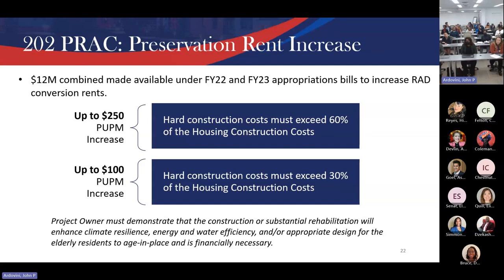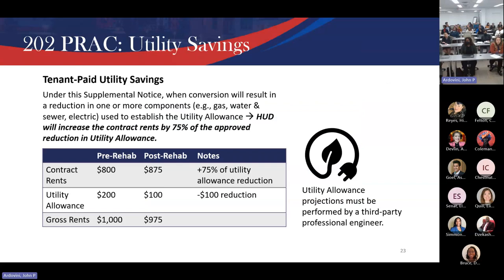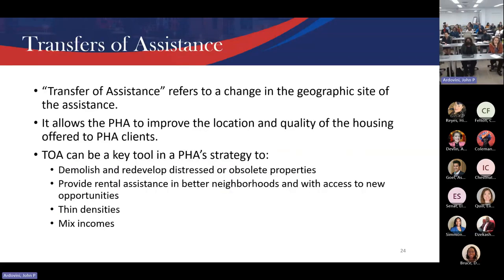The utility savings rent boost: when scopes of work address systems or building envelopes, the utility allowance cost savings aren't passed to the owner under normal circumstances. Under RAD, you can get a study and up to 75% of those cost savings can boost your rents — though it's rent-capped. This same utility boost mechanism is also part of GRP. A couple more slides on transfer of assistance and Faircloth.